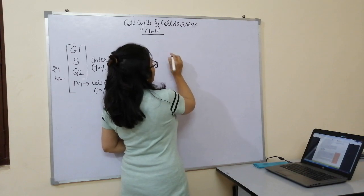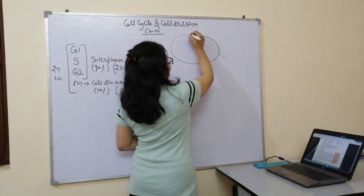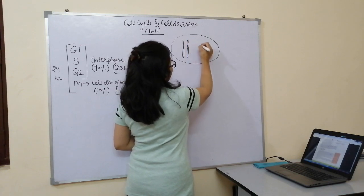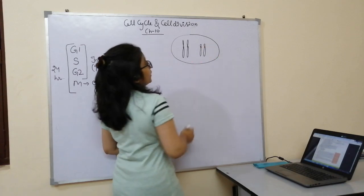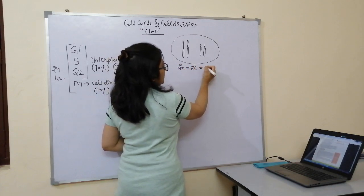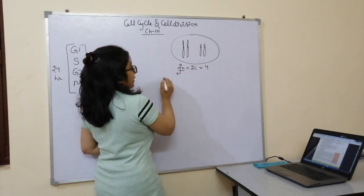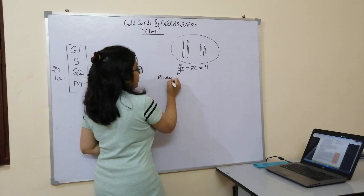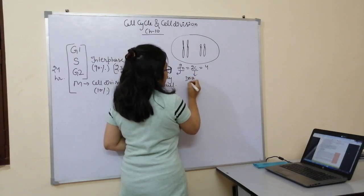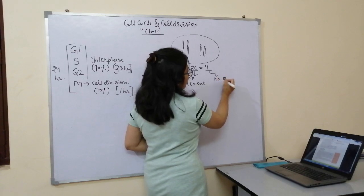Let's take an example of a typical eukaryotic diploid cell. It has two chromosomes of each type. This is expressed as 2N = 2C = 4. Here, N stands for ploidy level, C indicates DNA content, and the number 4 represents the number of chromosomes. This cell is in its G1 phase.